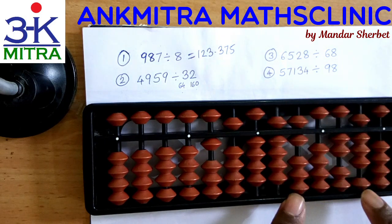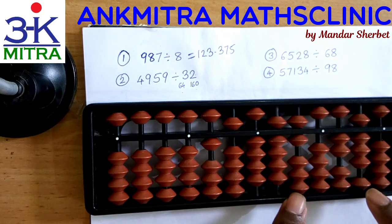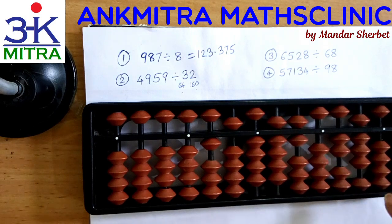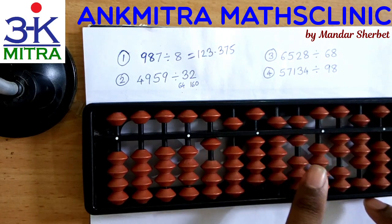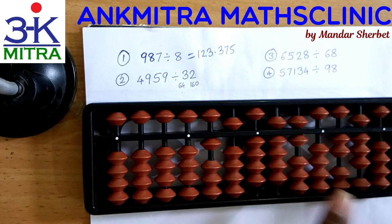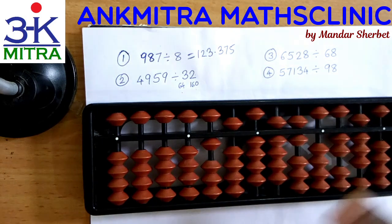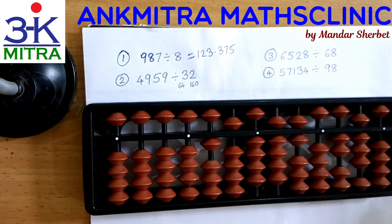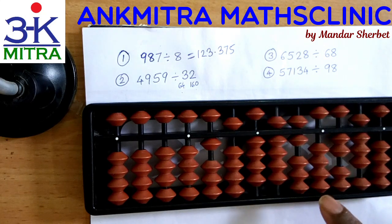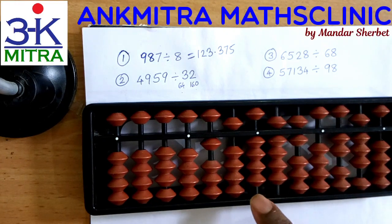Now we have 28 remaining, which is smaller than our divisor. We can move one rod further and continue, or we can stop here because we already have two digits in the decimal. If we continue, we might get a third, fourth, or fifth decimal digit. As we move deeper into the decimal part, the importance of the place value reduces. So we can stop at two or three decimal digits. The answer we have is 154.96.